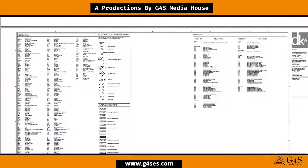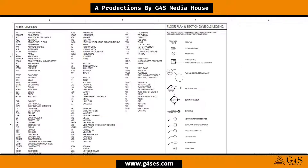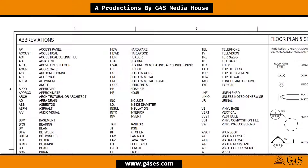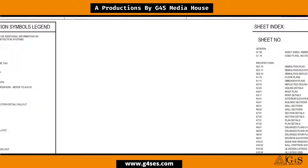It is called the general drawing. This drawing has abbreviations that will be used in the detailed drawings. For example, AP is used for access panel. So wherever in the coming drawings you see this abbreviation, it would mean access panel. On the right side, you will see the sheet index.